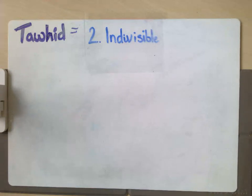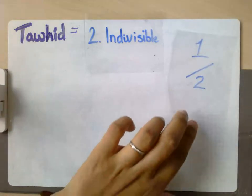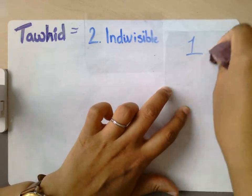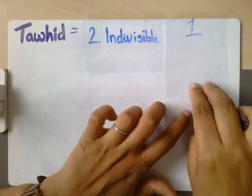So the second part of Tawhid and its concepts that it encompasses is the idea that God is indivisible. So what do we mean by indivisible? As I've said before, it means that God can't be divided. So if you think about it like a fraction, you can't break God down into fractions. It just doesn't work. There is only ever one God.